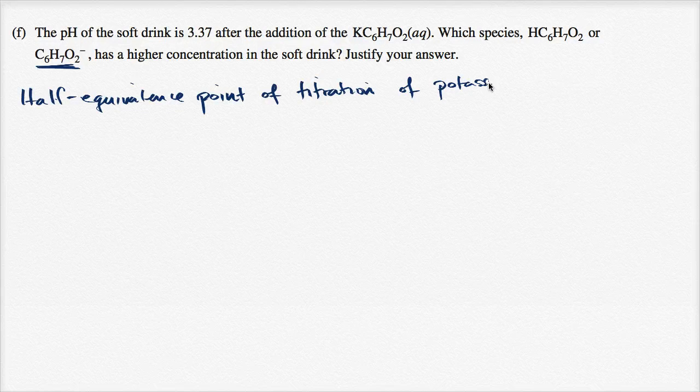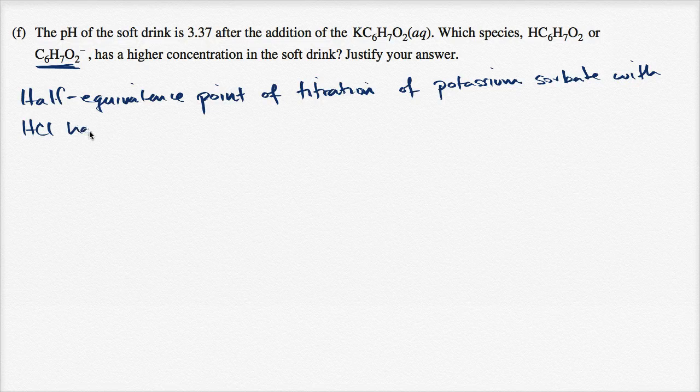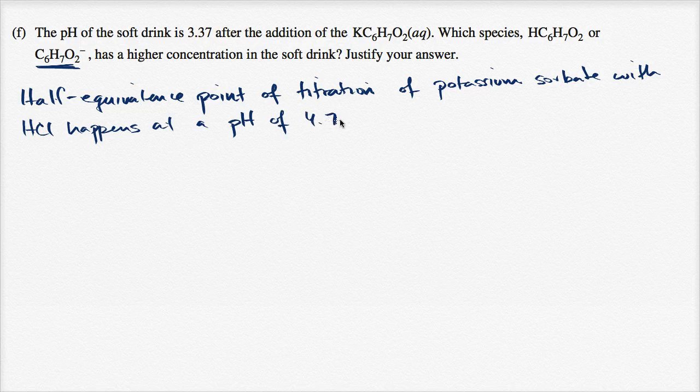...potassium sorbate with hydrochloric acid happens at a pH of 4.77.